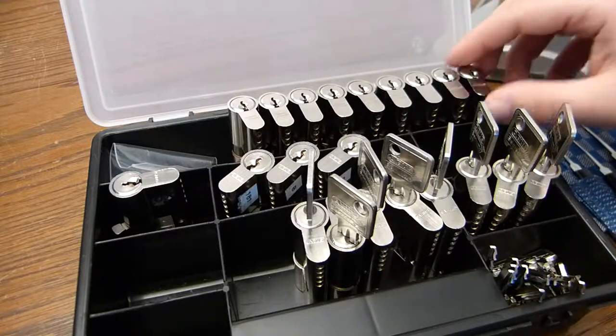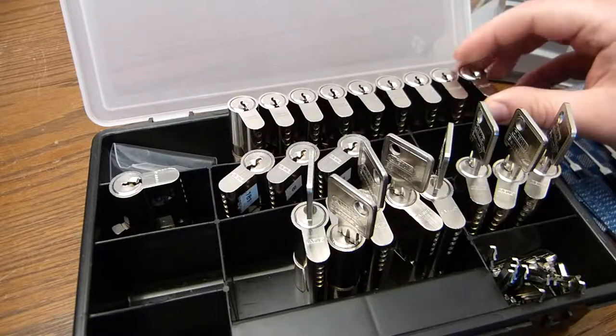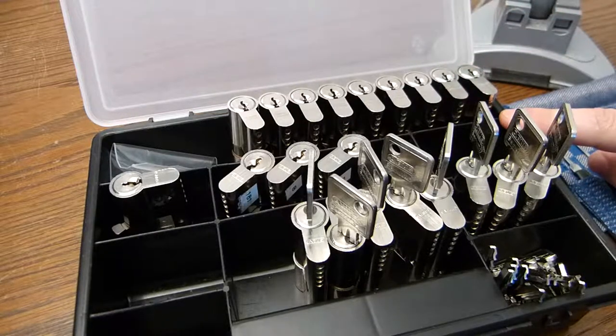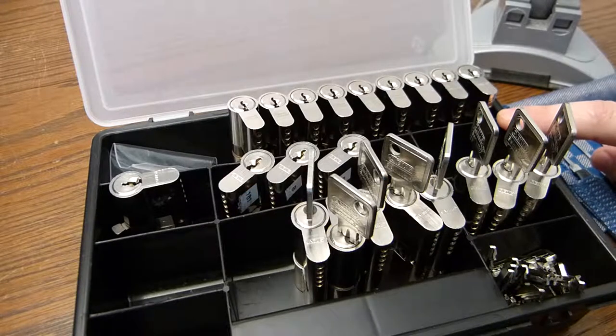This is a box of Abus locks, Euro cylinders. There are the C83 and C73 variants.